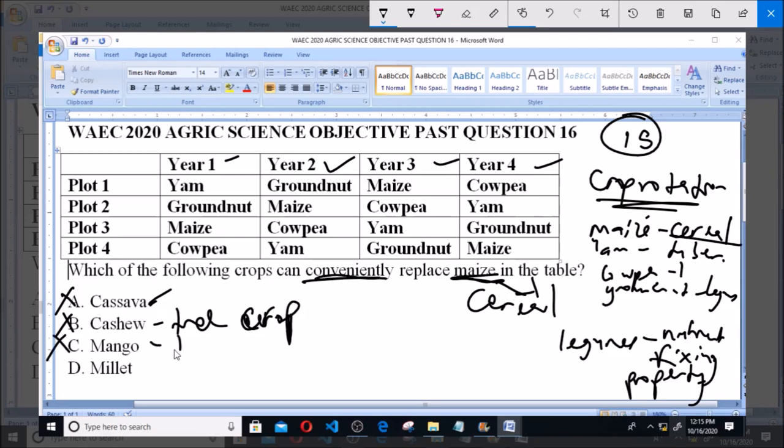Mango as well is a tree crop and cannot be used to replace maize on the table. So, it is not the answer to the question.